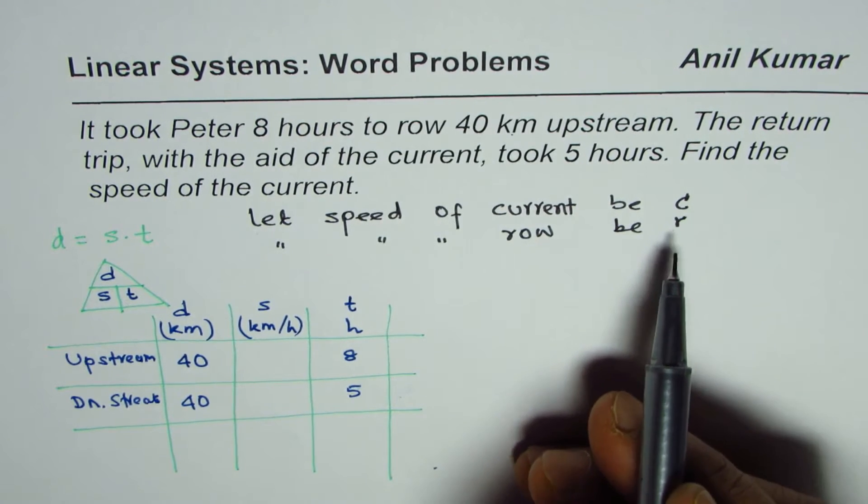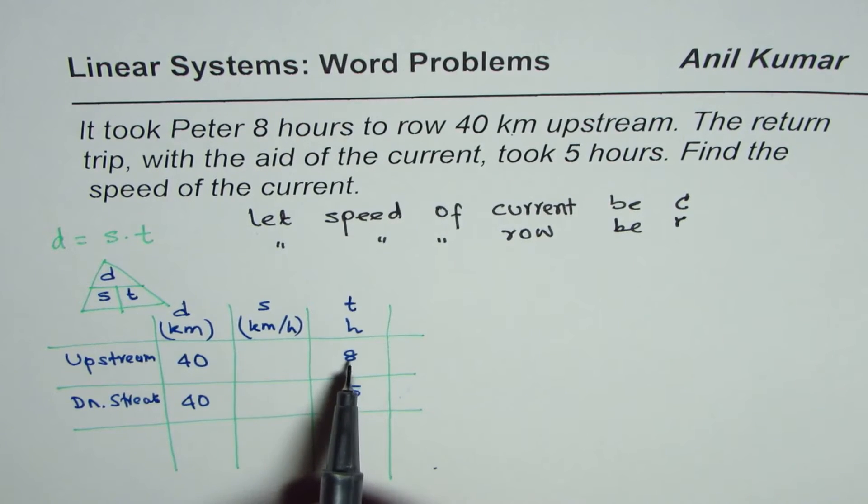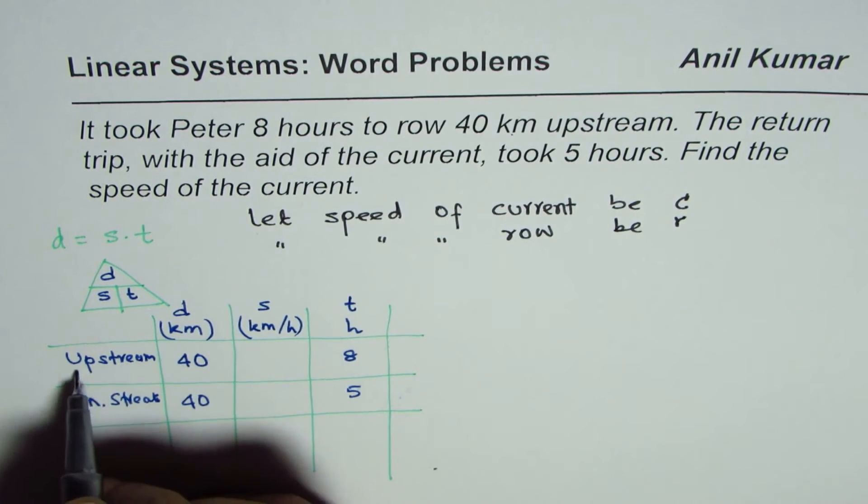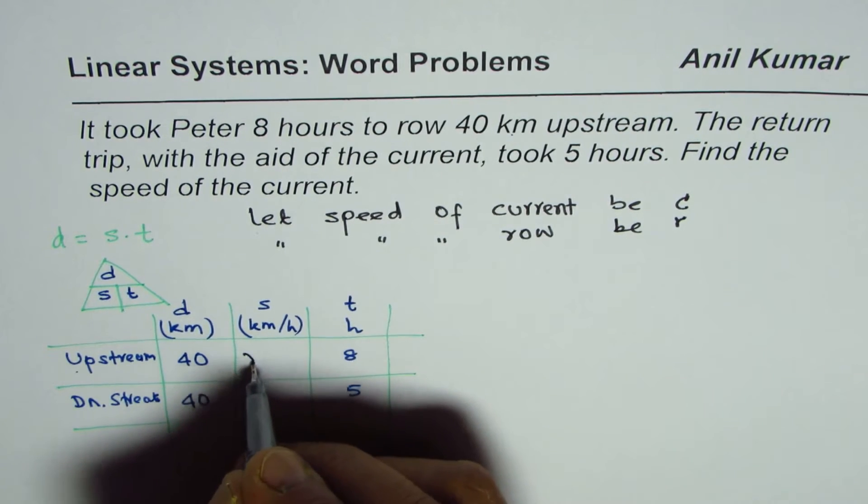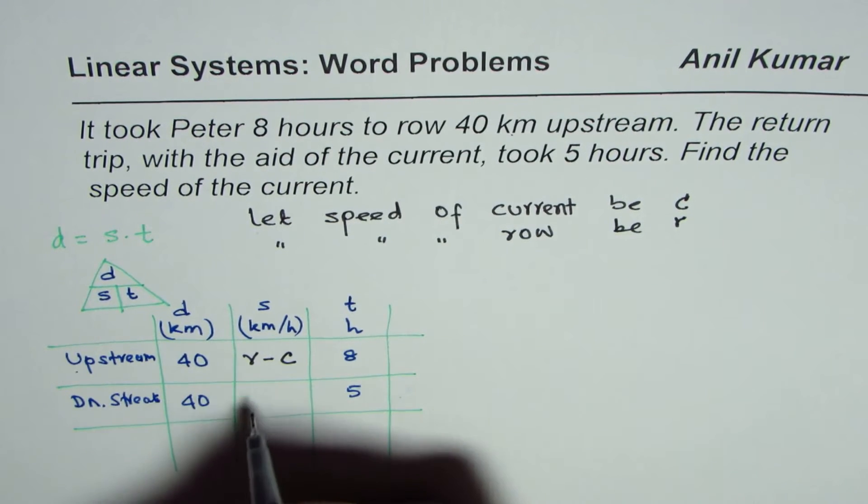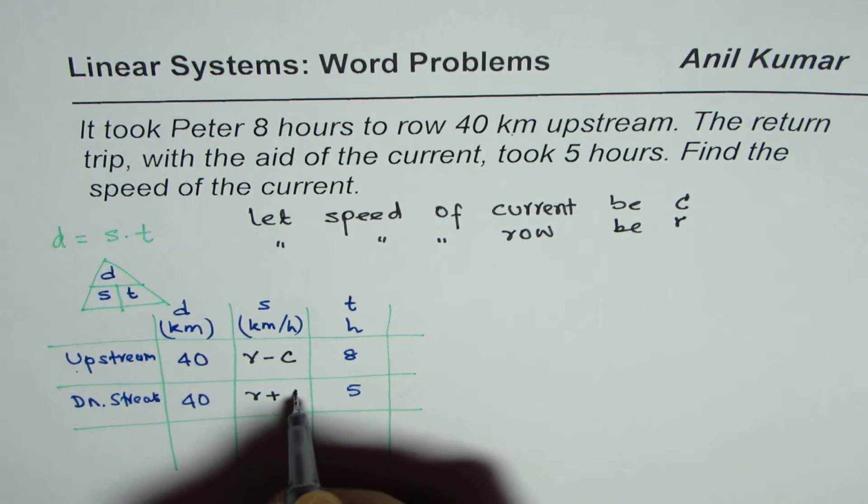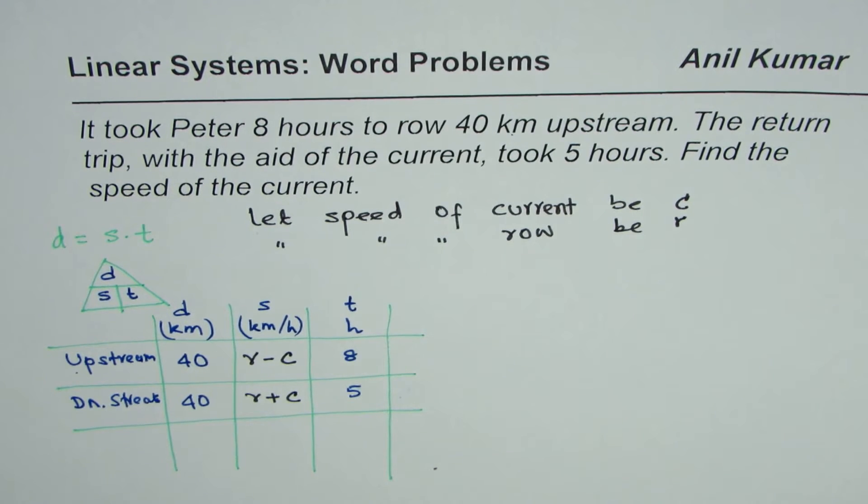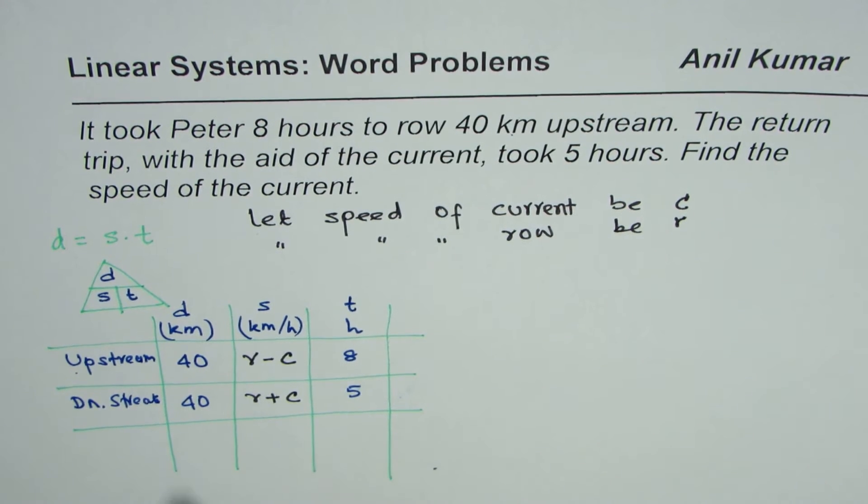When you're going upstream, current is working against you so the speed is lesser, taking more time. So upstream the speed will be r minus c. When you come downstream, the current aids so it helps to move faster, so the speed is rowing speed plus the current. So that is how it is related.